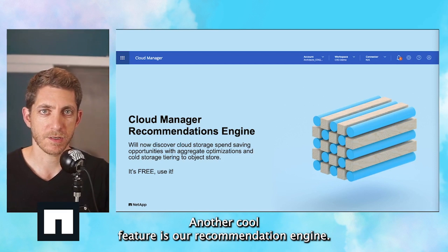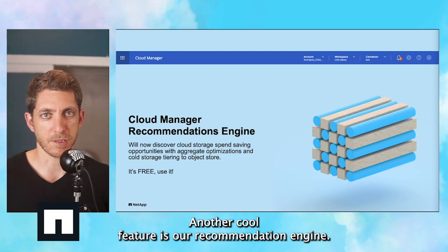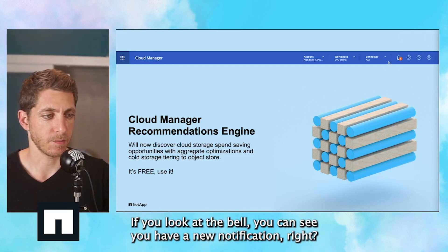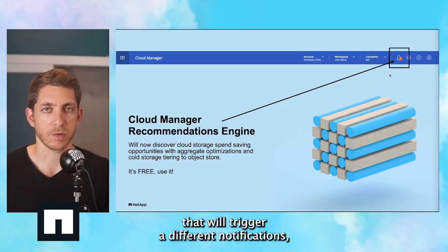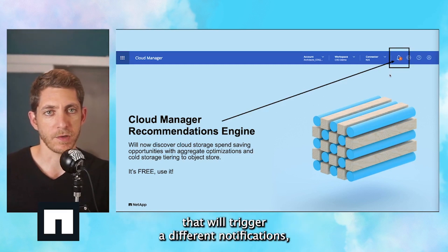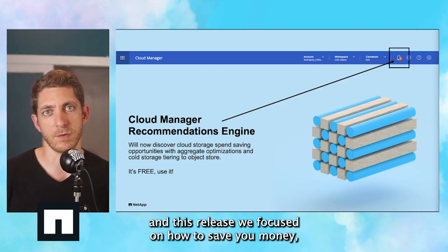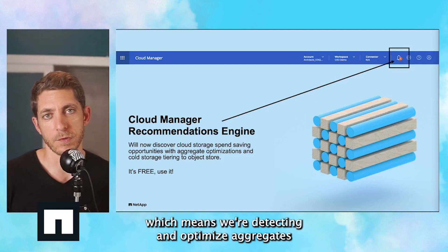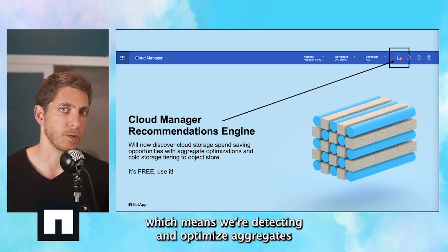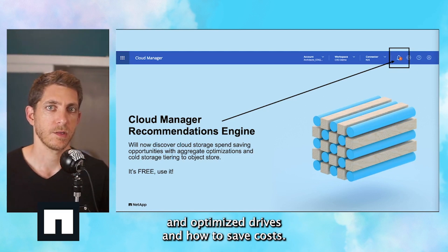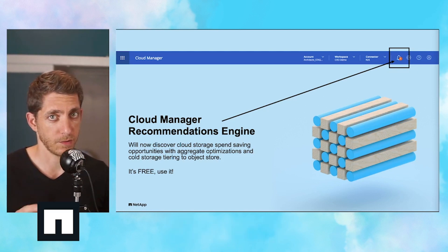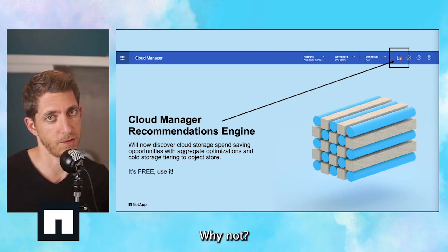Another pretty cool feature is our recommendation engine. If you look at the bell, you can see you have a notification. That will trigger different notifications, and this release we focused on how to save you money, which means we're detecting unoptimized aggregates, unoptimized drives, and how to save costs. You see that bell? Click it. It's free — why not?